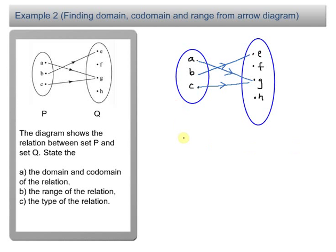Let's look at this example here. The relation between set P and Q, this is set P and set Q here, are represented by an arrow diagram.